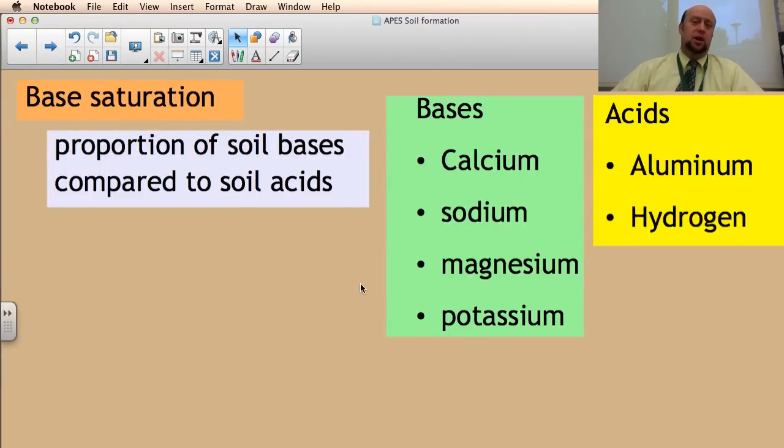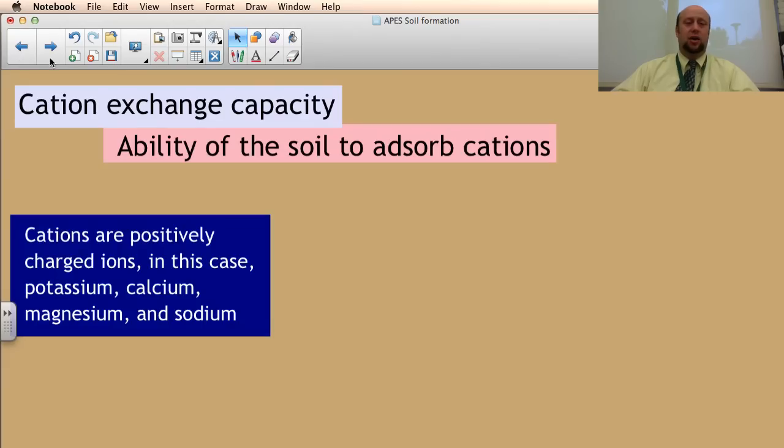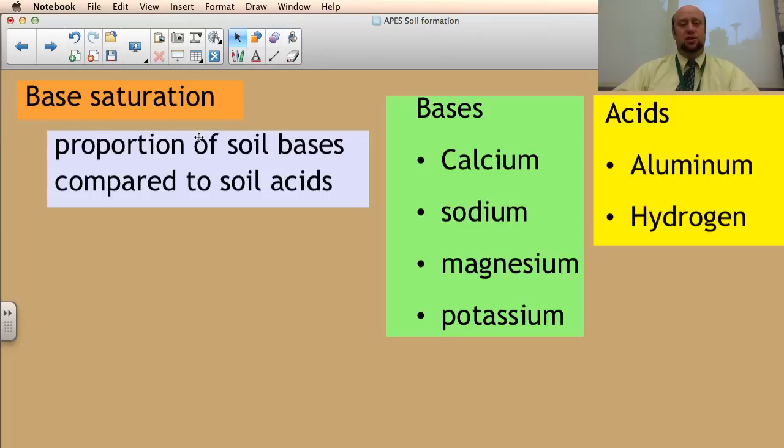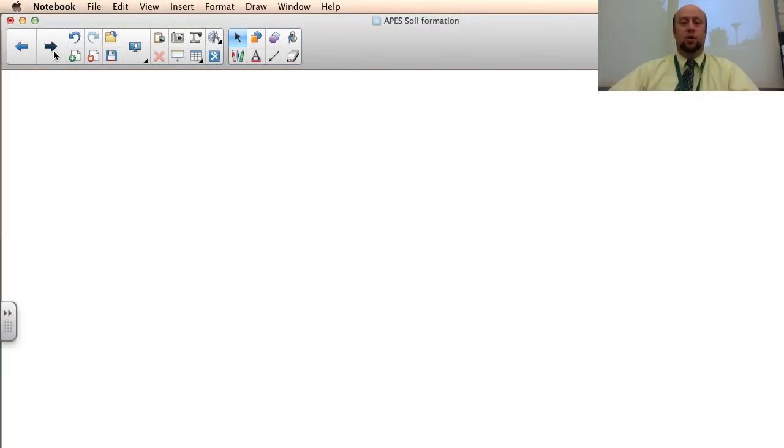Our next thing is the base saturation. Remember that base essentially is the opposite of acid. Essentially what base saturation means is how many bases are in the soil compared to the acids. In general, this is a broad generalization, we want bases and not acids in most of the soil because most of our nutrients are bases. Most of the acids tend to be heavy metals and things that are going to lower the pH and make it so that organisms can't live there. So we really want more base saturation. In general, if you've got a high cation exchange capacity and a high base saturation, that's usually going to mean that your soil is a lot healthier. It's going to be much more conducive to growing living organisms.